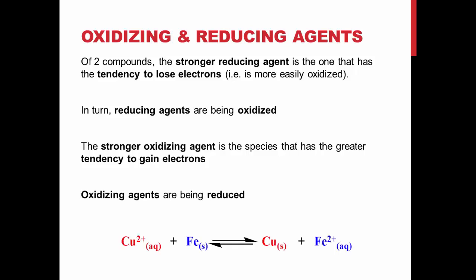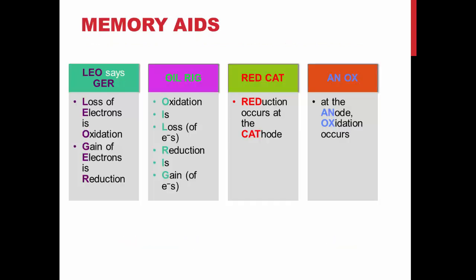The terms oxidation and reduction, and oxidizing and reducing agents, and what they mean in terms of electron movement, are easy to get confused. Here are a few acronyms that might help to remember what is going on in each case.